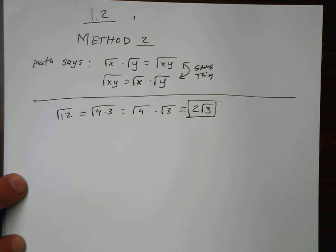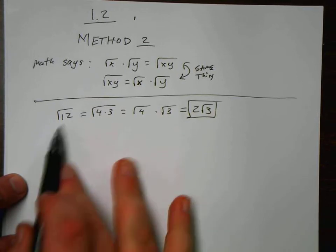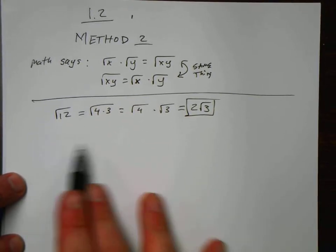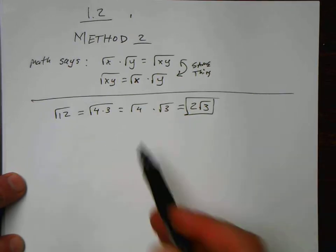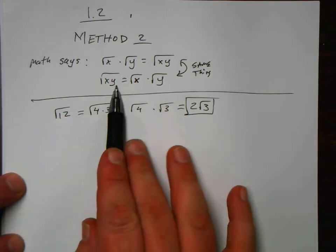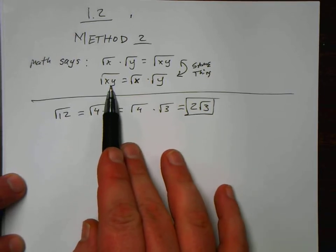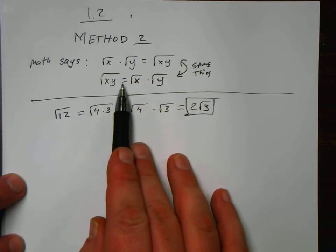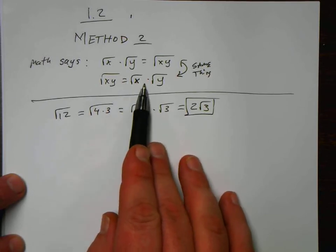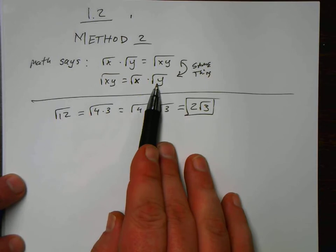Alright, so what we did on the last video, we'd have to break 12 down into all these numbers, and then find them and circle them and go through that whole process. But here, I'm just taking advantage of what math tells me. Math says that when I have two things underneath a radicand that are being multiplied, I can say that it's really the same thing as the square root of the first thing times the square root of the second.